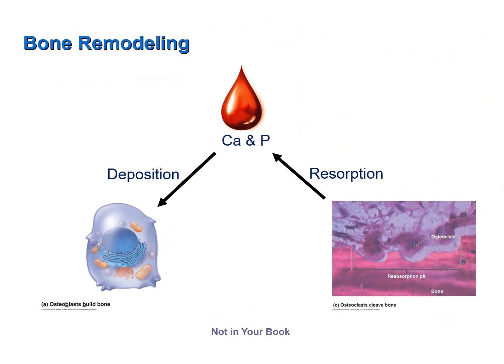As bone is remodeled, there is a cycling of calcium, phosphorus, and other components between bone tissue and the blood. As osteoclasts break down and dissolve bone through resorption, calcium and phosphorus are released into the blood. As osteoblasts deposit new bone, calcium and phosphorus are moved from the blood and incorporated into the new bone tissue.